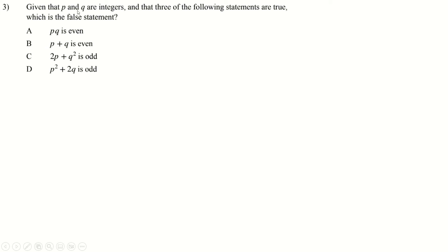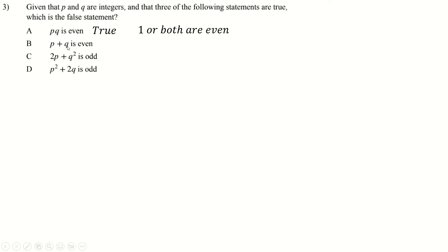Question 3: p and q are integers, and one of these statements is true. When you get one of these questions you just have to pretend the first one is true and work your way down; if there's a contradiction, go back to the top, pretend it's false, and work your way down. So if pq is even, that means one or both of p and q are even. If p + q is even, both of them have to be even.